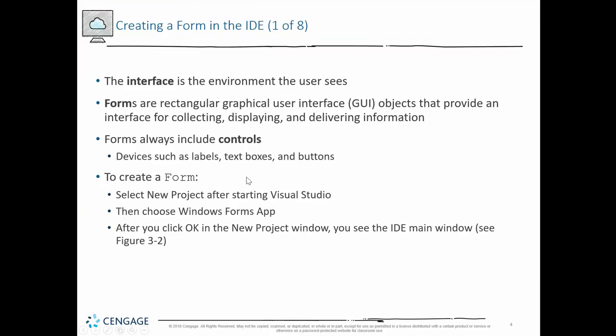The interface is the environment the user sees — it's what you show the user. The implementation is what you hide from the user; it's encapsulated from the user. We will be using forms for most of the semester as graphical user interface objects. A form by itself doesn't do anything — it typically has to have some kind of controls associated with it.